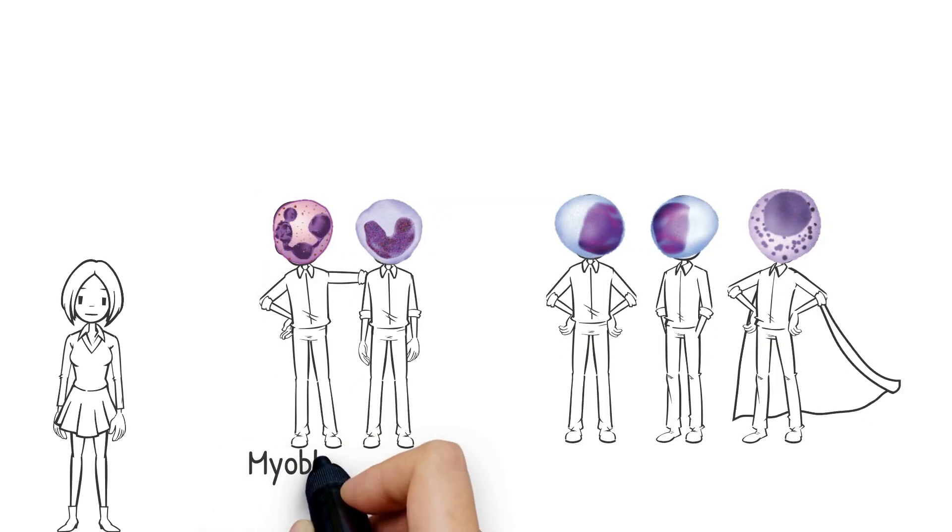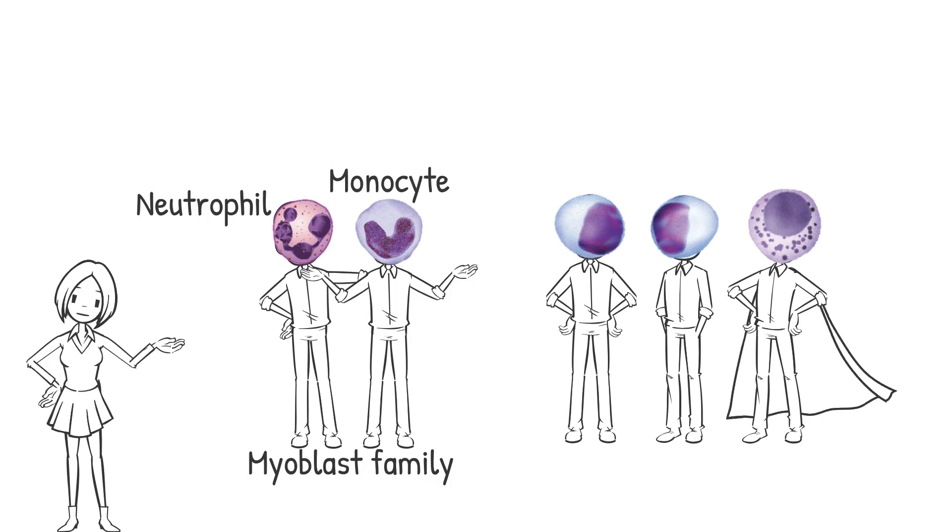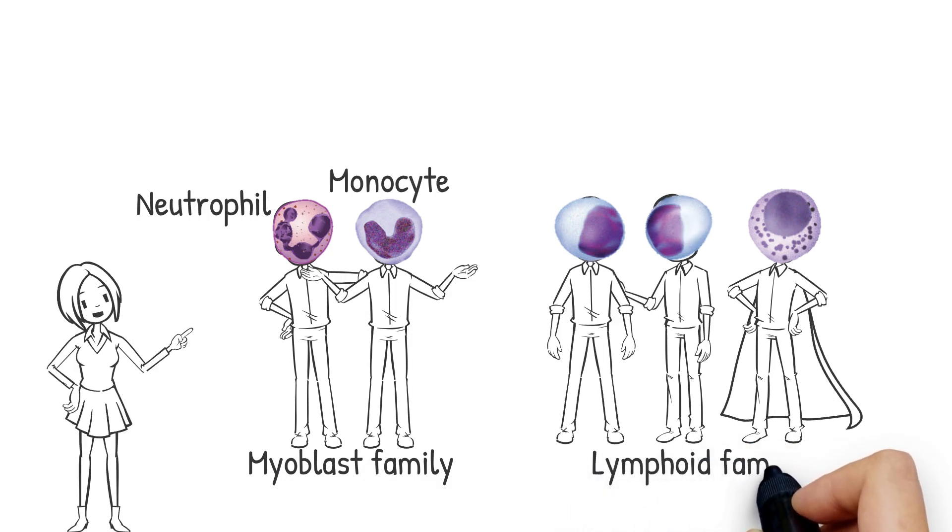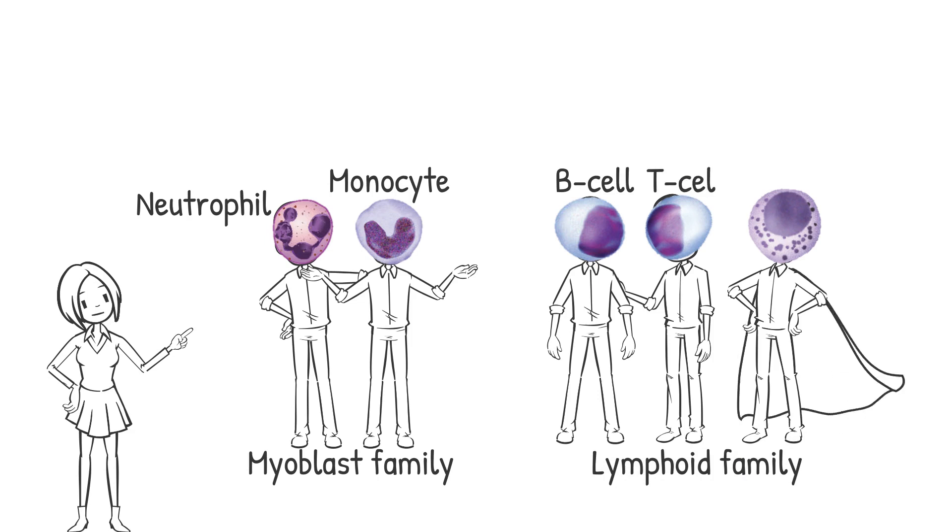From the Myeloblast family, we have Neutrophil and Monocyte. And from the Lymphoid family, we have Twins, B and T lymphocytes, and Mr. Natural Killer.